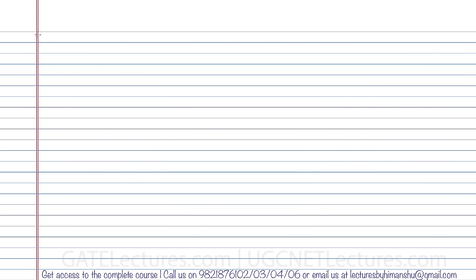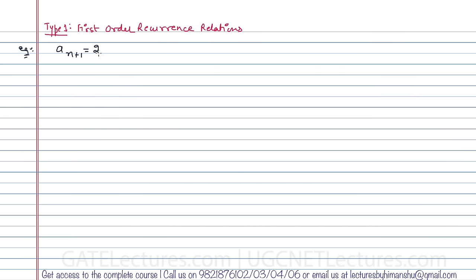The first type we are looking at is the first-order recurrence relation. We'll take a simple example: the recurrence relation a(n+1) = 2·a(n), with the initial condition a(0) = 1.